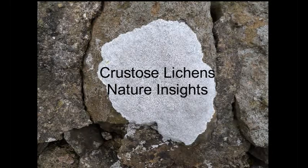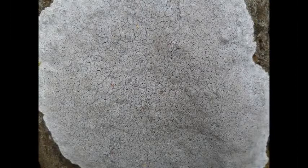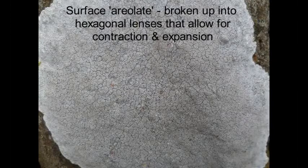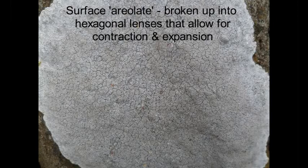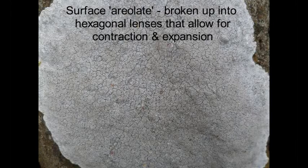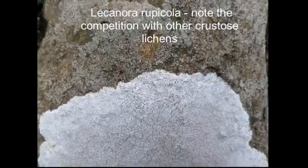Lichens exist in three broad groups. There's the fruticose ones that often stand upright and quite bushy. There's the foliose ones that are a bit leaf-like, so they might look like the leaves perhaps of a daisy on a lawn.